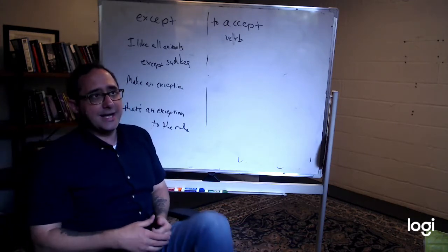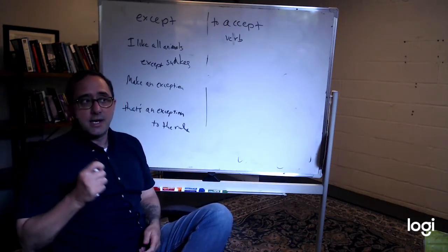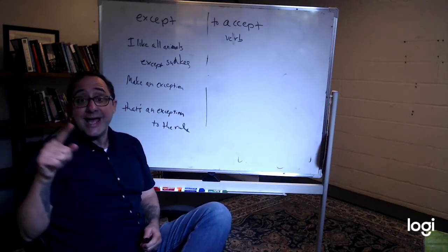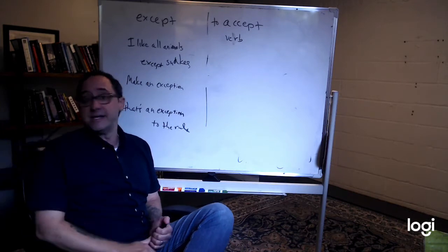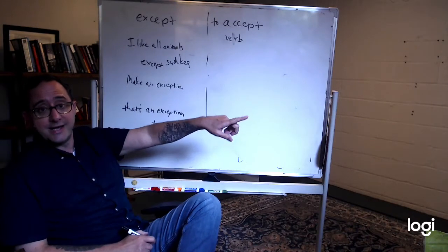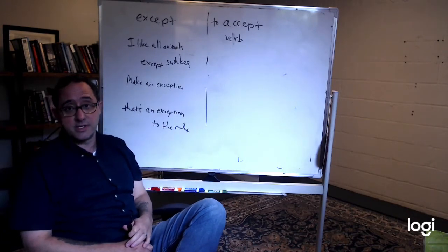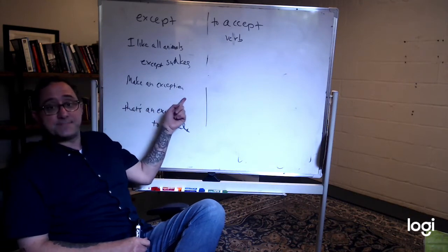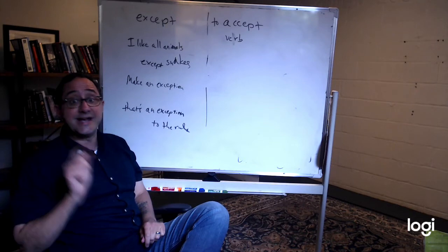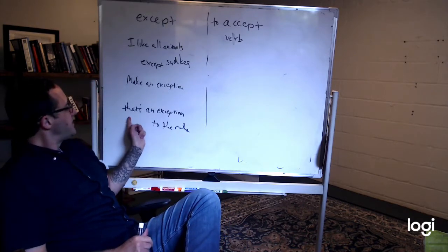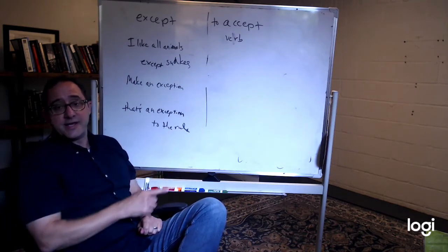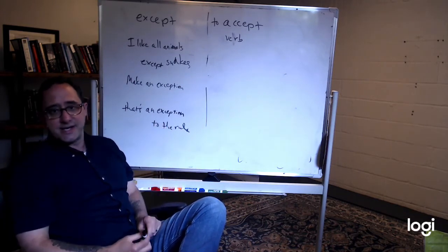Or let's say, the teacher assigns homework to you and they say, everyone has to do this homework except for Billy. Billy doesn't have to do it because he did so well in class today. Or everybody can go out and play except for Billy because he didn't get his work done. I make an exception. So, everybody has to do something, but I make an exception for this one person. They don't have to do it, right? That's an exception to the rule.